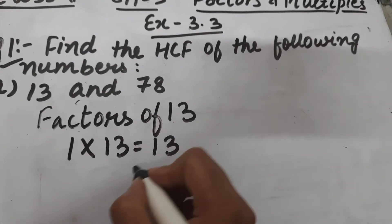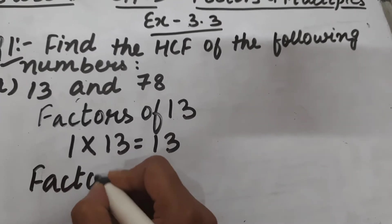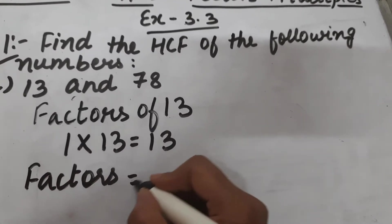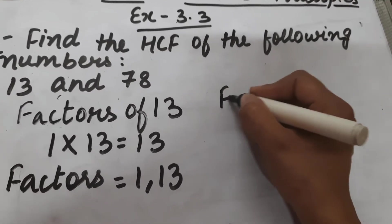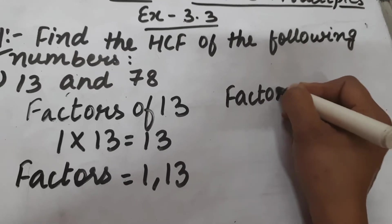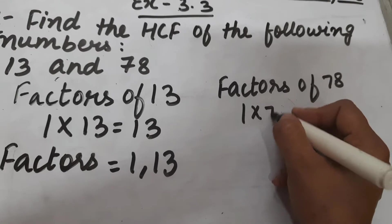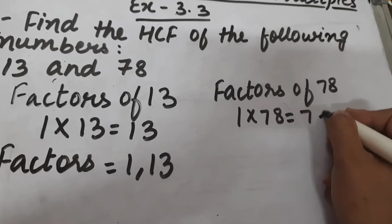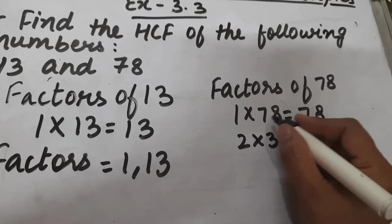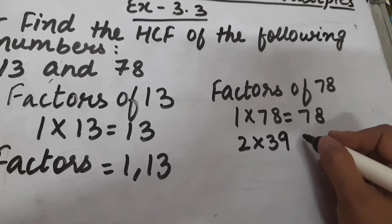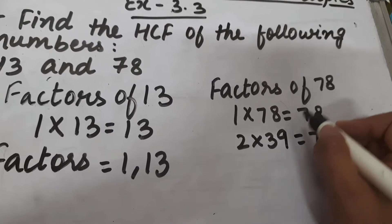Factors of 13: 1 × 13 = 13. Since 13 is a prime number, its factors are only 1 and 13. Now we will find the factors of 78: 1 × 78 = 78, 2 × 39 = 78.